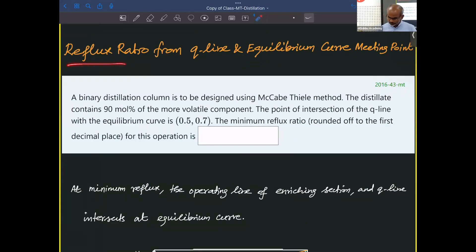This is about getting the reflux ratio from the point of intersection of Q line and equilibrium curve. We are given with the intersection point of Q line and equilibrium curve. From that, we need to find the reflux ratio. This was asked in GATE chemical engineering 2016 as a two mark question.